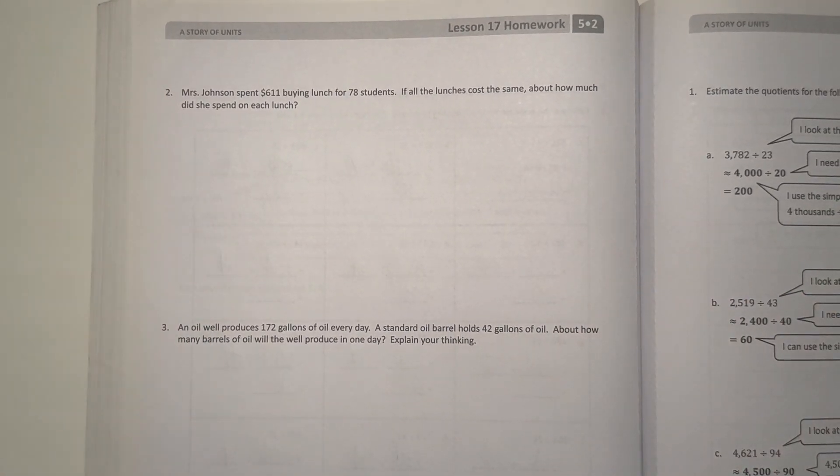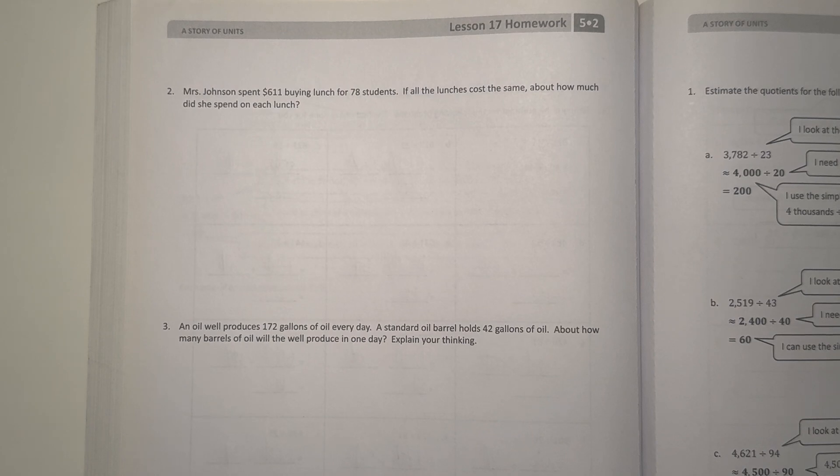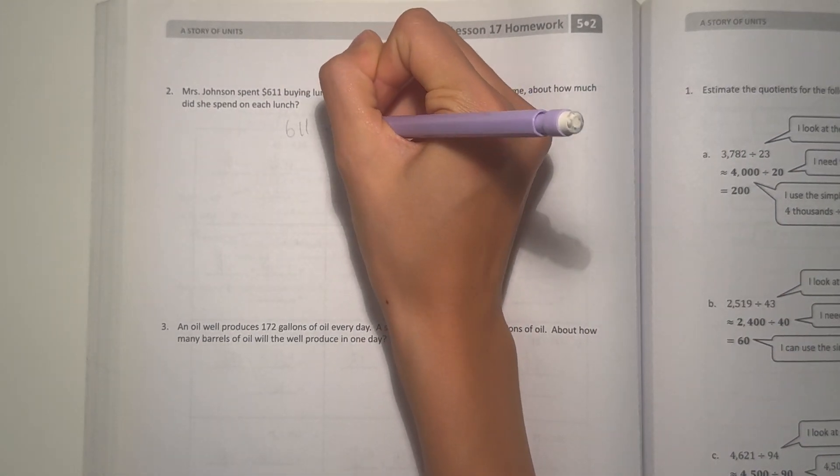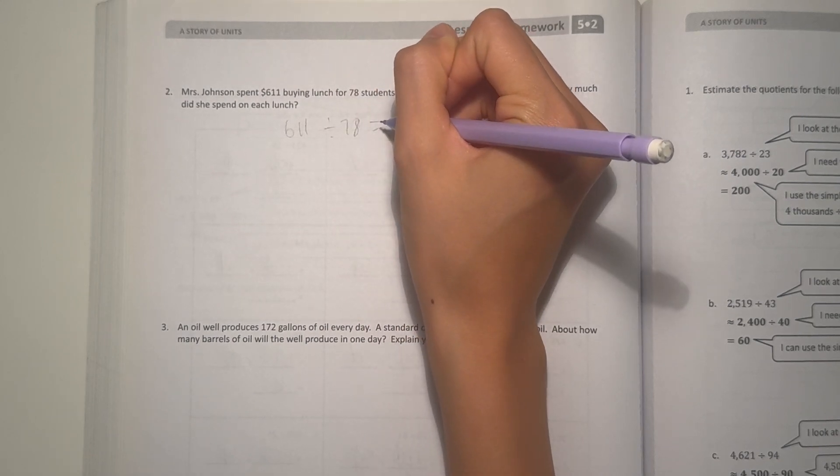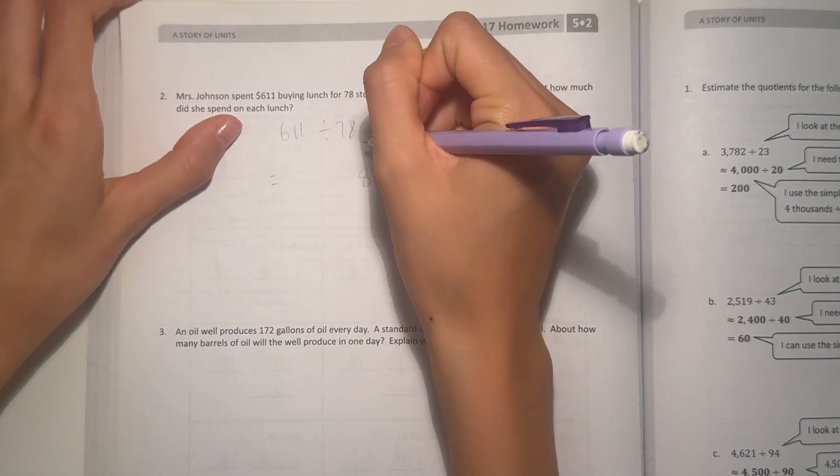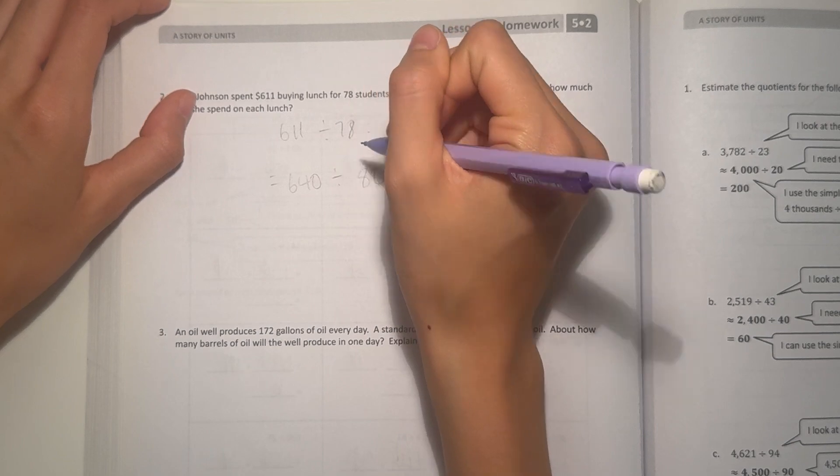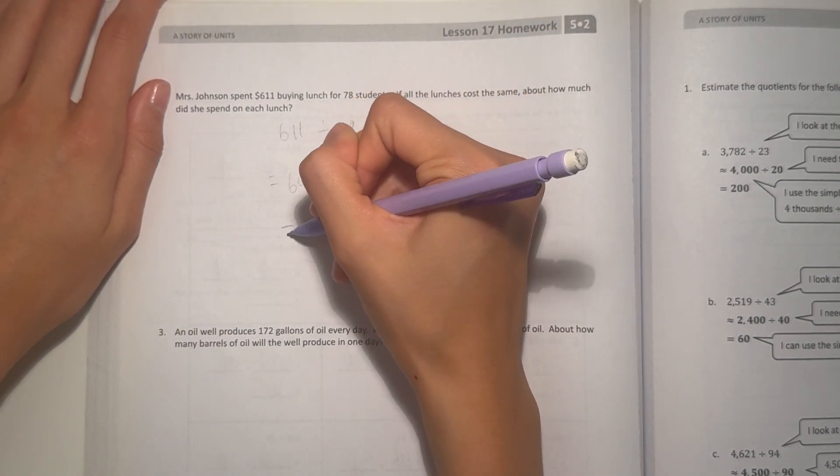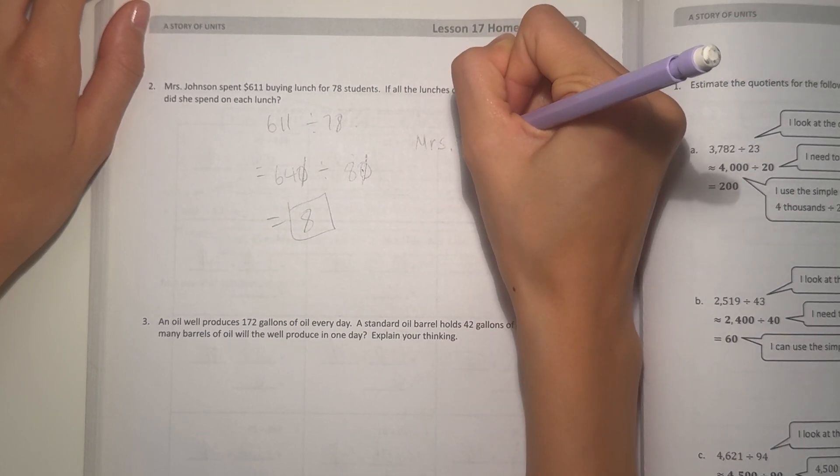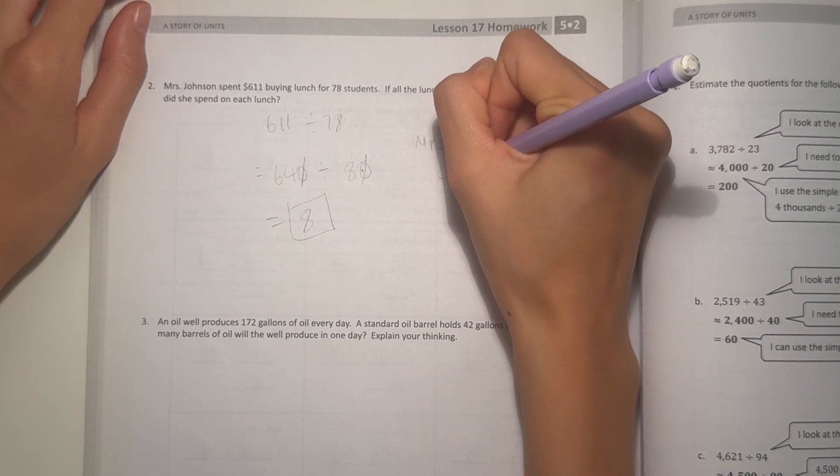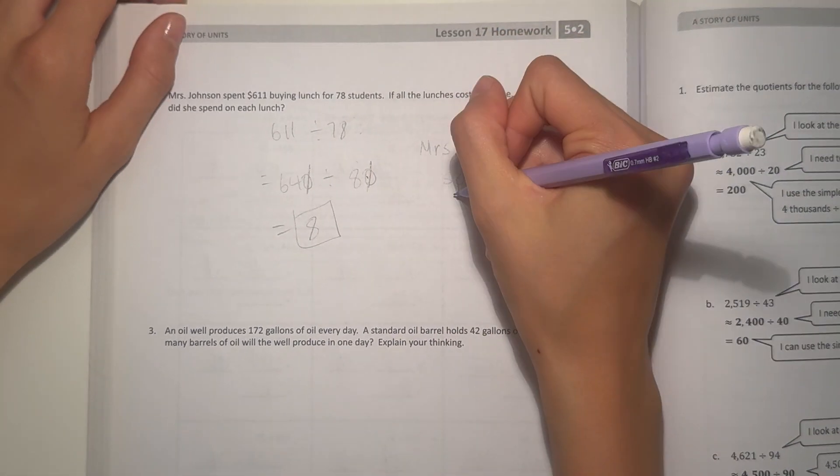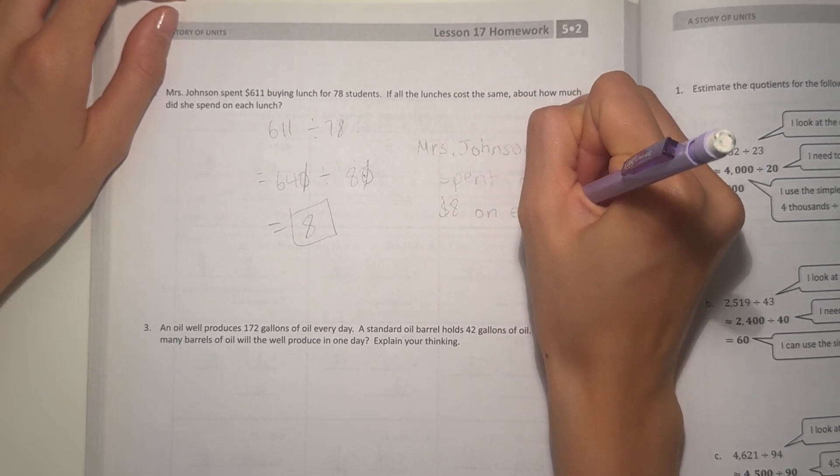Number 2. Mrs. Johnson spent $611 buying lunch for 78 students. If all lunches cost the same, about how much did she spend on each lunch? 611 divided by 78. Let's see, 78 can round to 80, and 611 can round to 640, since that's the number 80 can easily go into. Cross off the zeros. 64 divided by 8 is 8. So 8 is our estimate. So Mrs. Johnson spent about, and we're saying about because we rounded, about $8 on each lunch.